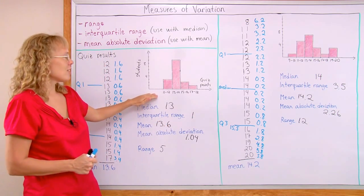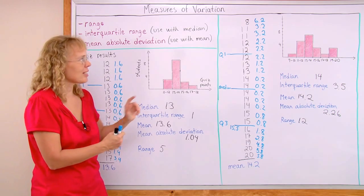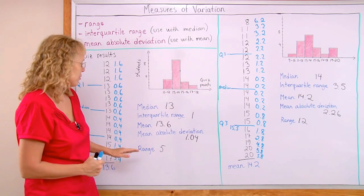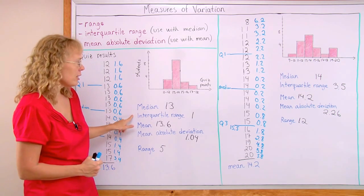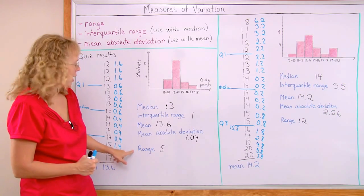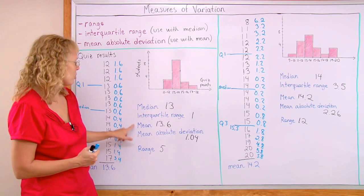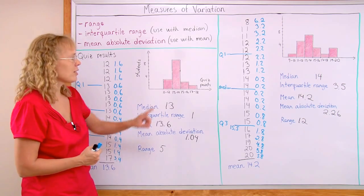However, in here the results varied way less than over there, which we can see from the interquartile range, from the range, and from the mean absolute deviation. All of those measures are less here than over there.